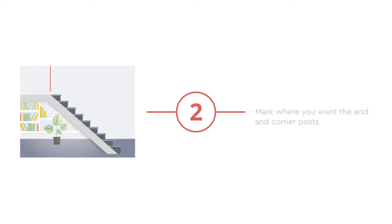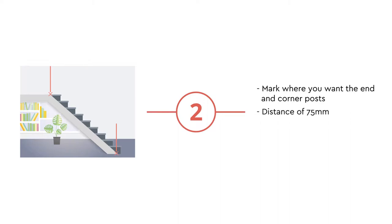Secondly, using your pen or pencil, mark where you want the end and corner posts of the balustrade to be positioned. These markings should be a distance of 75mm from the edge of your stairs or balcony.